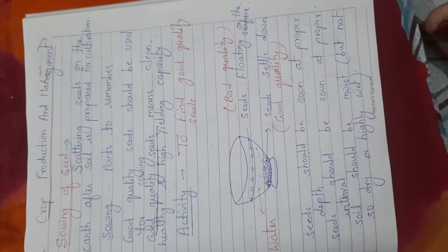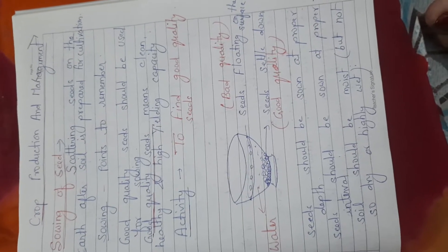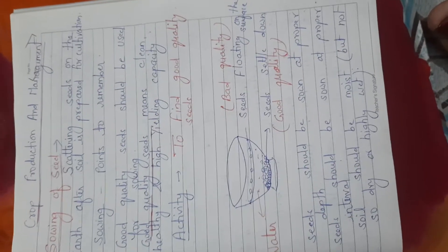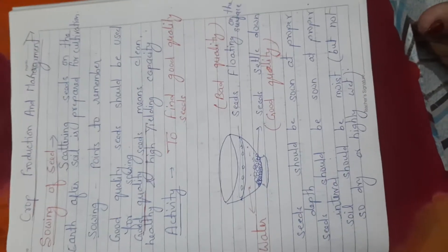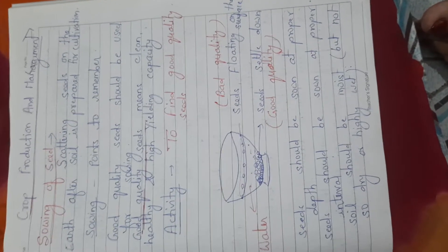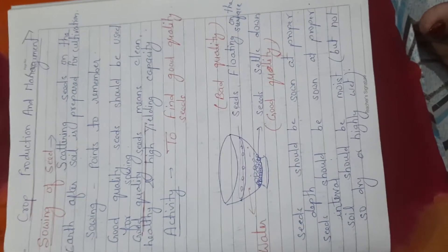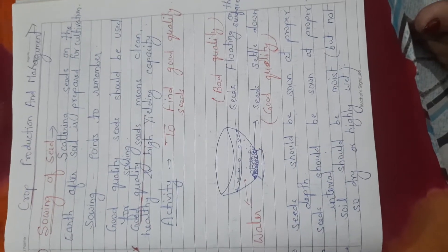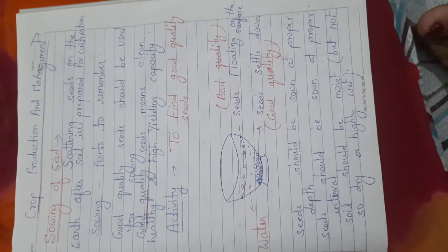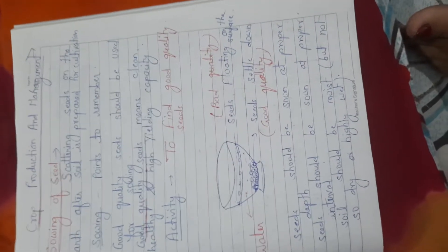If seeds are sown in the superficial layer of the soil, they may be eaten by birds or animals. And if they are too deeply situated, they will not be able to germinate. The second point is seeds should be sown at proper intervals — a proper gap should be there between two seeds, otherwise overcrowding will occur and some seeds will fail to germinate. The third point is seeds should not be sown in either too wet or too dry soil — proper moisture inside the soil is important.